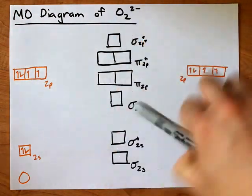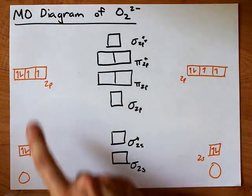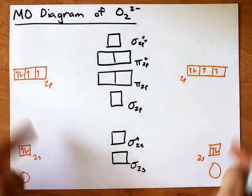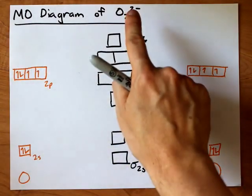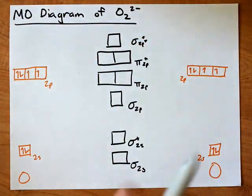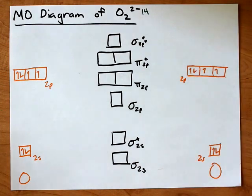Well, each oxygen brings 6 valence electrons with it, 2s2, 2p4. That makes for 12 valence electrons total, plus 2 extras for the minus 2 charge, that makes 14 valence electrons that we have to fill this molecular orbital diagram up with.